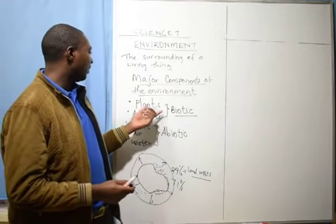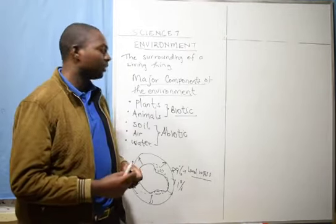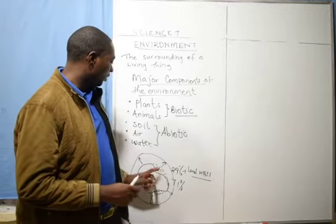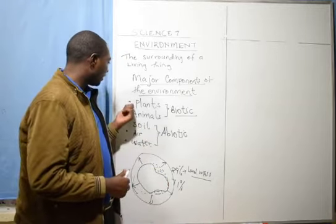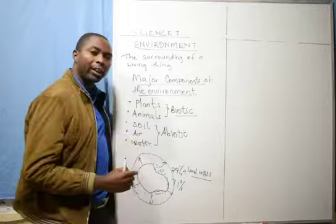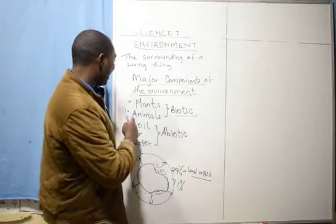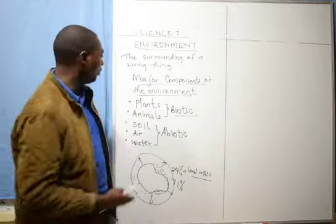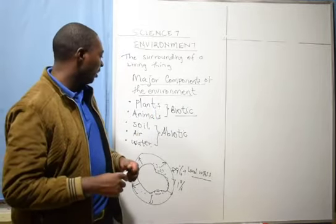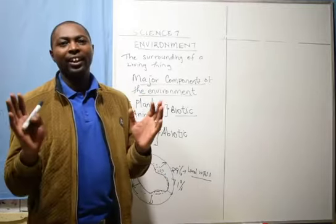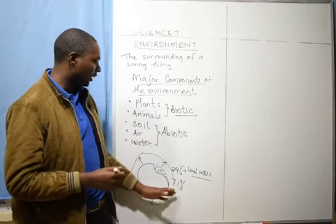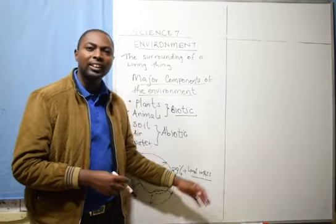We will now discuss the importance of these components. Water is necessary for aquatic animals like fish, and water also contains oxygen. Soil is important for plants to grow and for animals that live in the soil. Air is important for breathing and for photosynthesis in plants. Animals are important in decomposition, as a source of food to other animals, and as a source of manure for plants. These are the major components; other components include light, sound, buildings, and so on.